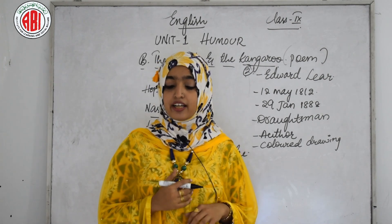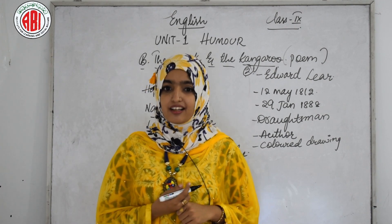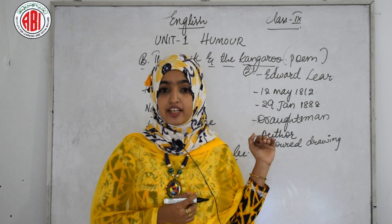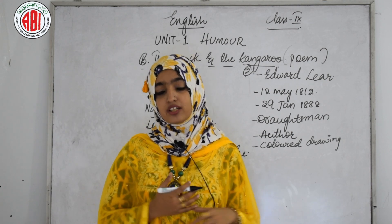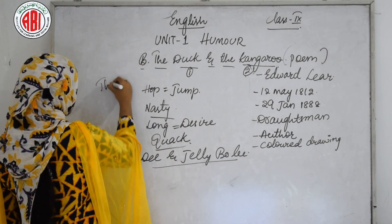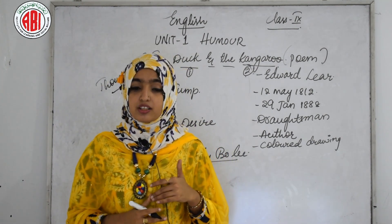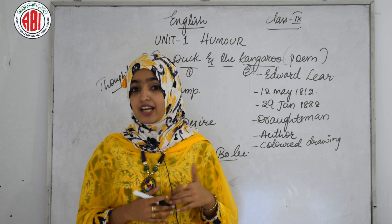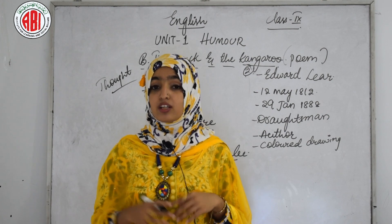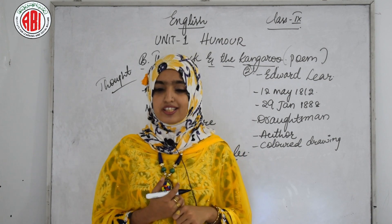In the third stanza, the kangaroo gives its reply. Said the kangaroo to the duck: 'This requires some little reflection. Perhaps on the whole it might bring me luck, and there seems but one objection.' The kangaroo is saying everything is fine and it would like to take the duck along, but it needs some reflection — some thought. It says it may be lucky to take the duck on the ride, but there is one objection.